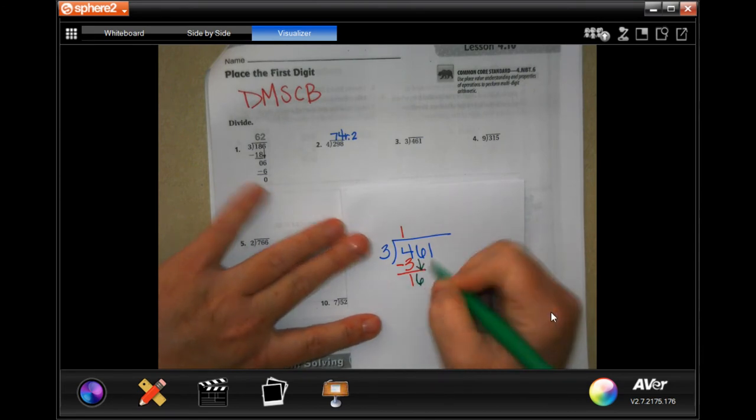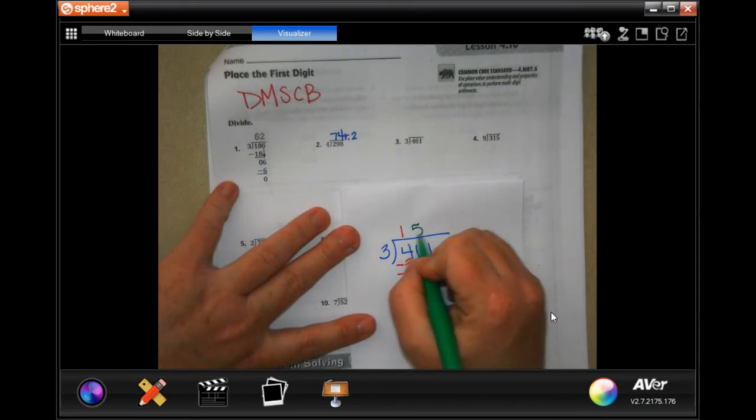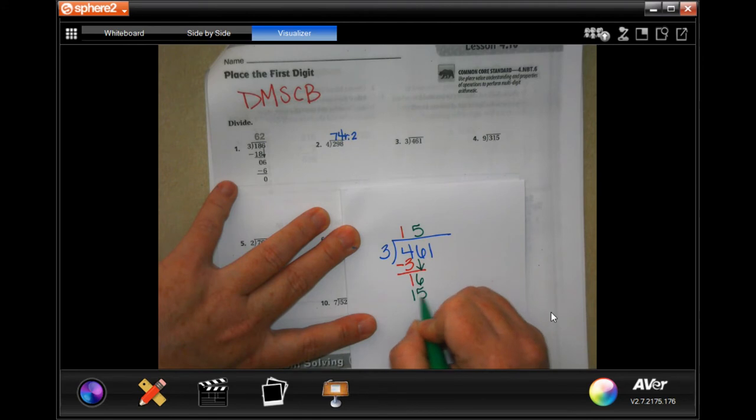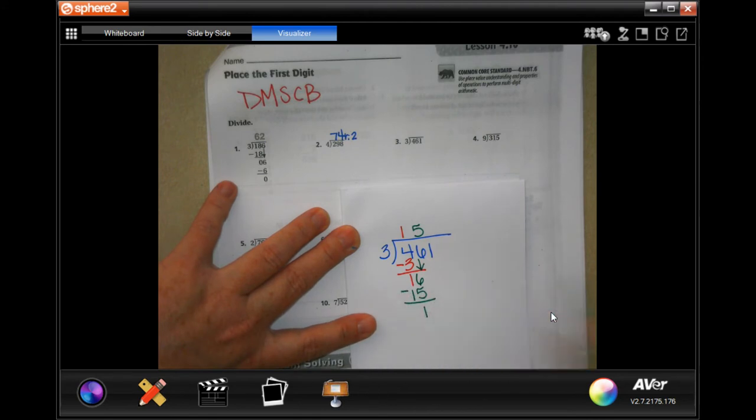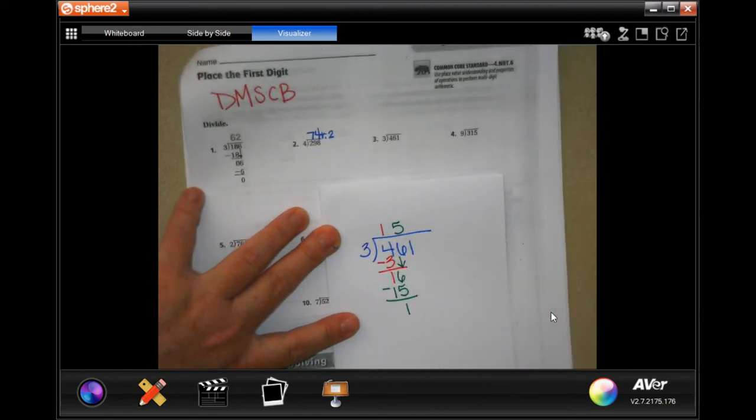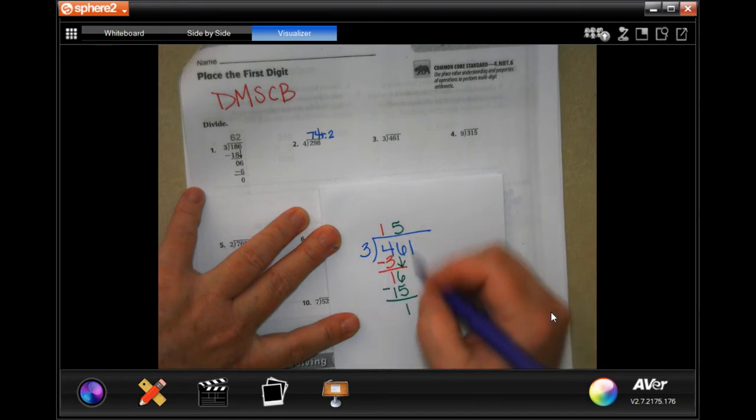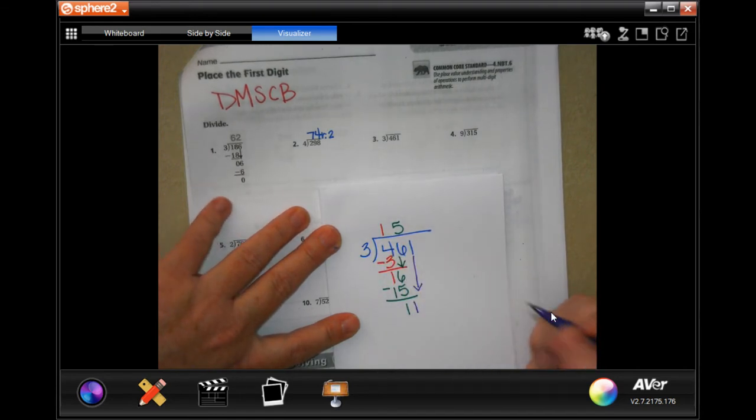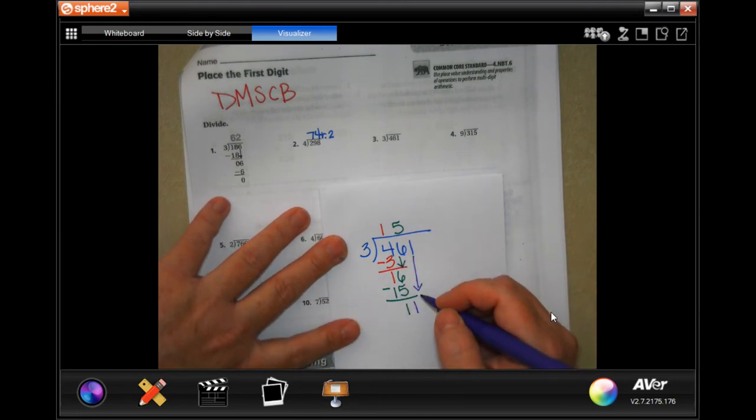So 1 is smaller than 3. So I'm going to bring down my 6. 3 will go into 16, 5 times. 5 times 3 is 15. Subtract, get 1. Again, 1 is smaller than 3. So I'm going to bring down my last 1. This is why it's so important to line up your column. See that you know where you are when you're bringing things down.